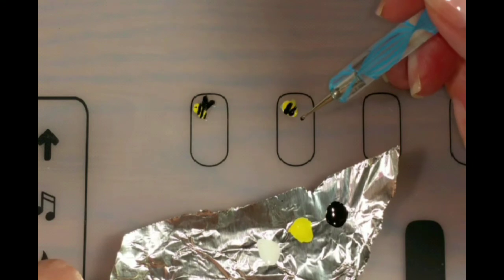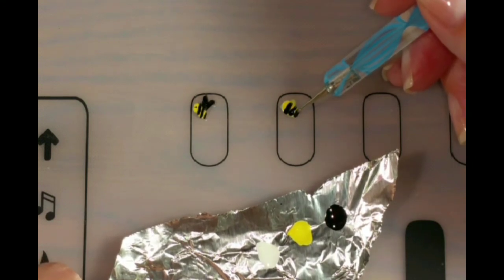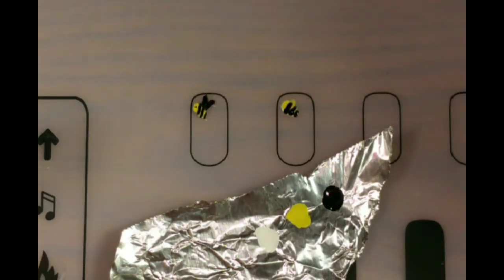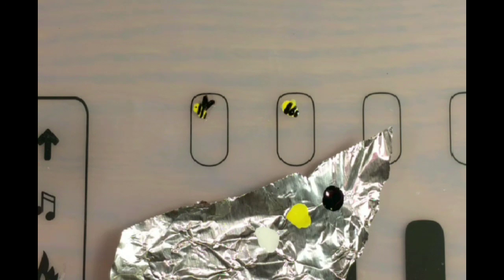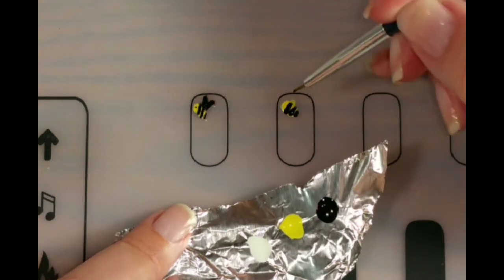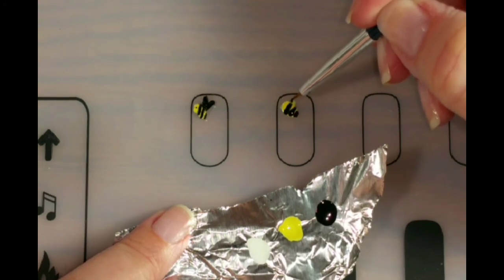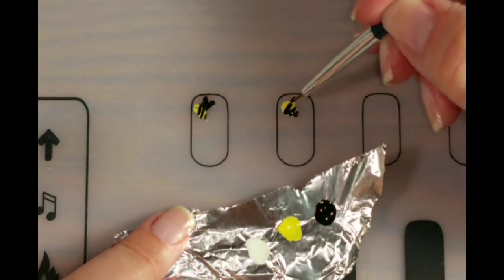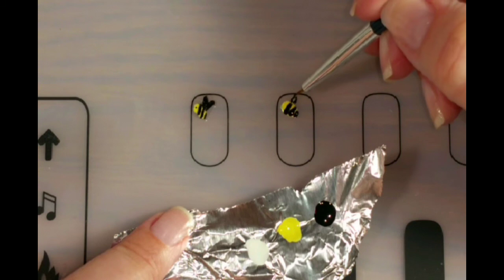Well, this is not turning out real good. That one looks really good. Okay. Then I went in and made some wings. Which I could have done with the dotting tool. Probably would have been easier. But I didn't.